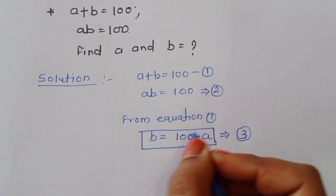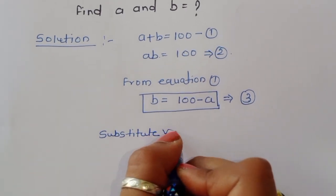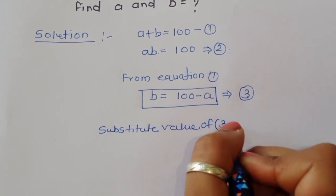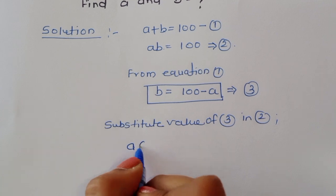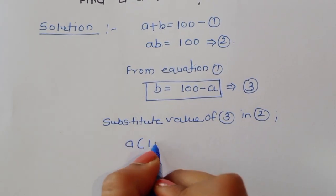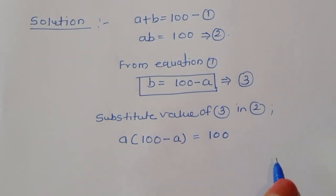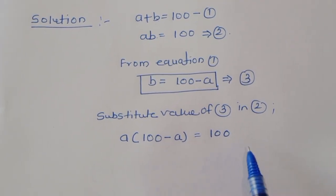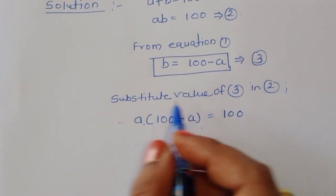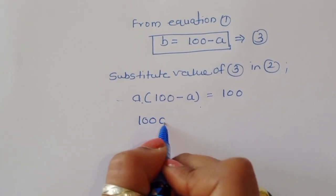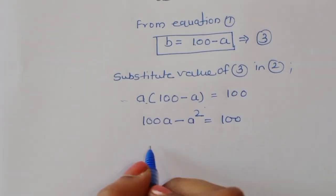Now substitute the value of equation 3 into equation 2. So a times b, where b is 100 minus a, is equal to 100. Now we got one equation: a times (100 minus a) is equal to 100. Multiplying this out: 100a minus a squared is equal to 100.